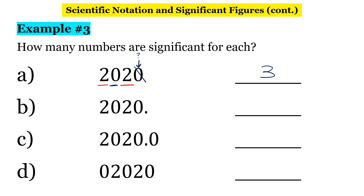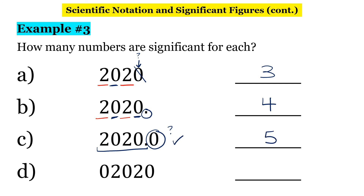Example B is pretty much the same thing, except we have a decimal. We have our two twos and a sandwiched zero — that's three. But in this case, because we have a decimal point, the trailing zero also counts, giving us four significant figures. In the third example, the first four numbers are all significant. The final zero is a trailing zero after a decimal point, so it also counts — giving us five significant figures.